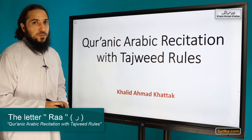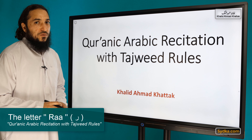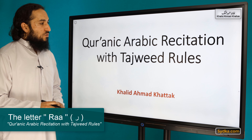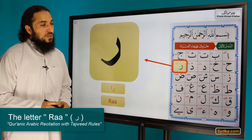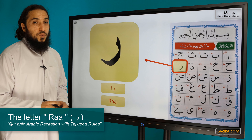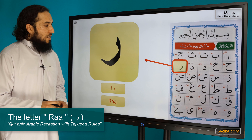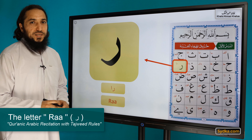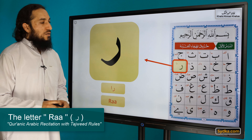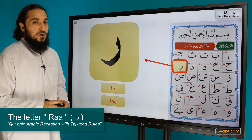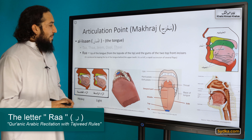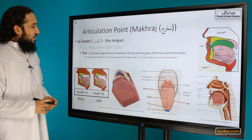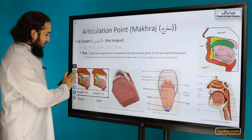Bismillahirrahmanirrahim, Assalamu alaykum wa rahmatullahi wa barakatuh. Welcome back to another session of Quranic Arabic recitation with tajweed rules. In this session we will be studying the tenth letter of the Arabic alphabet. It is called Ra and the sound is R.